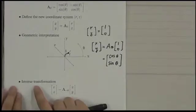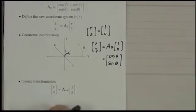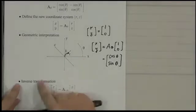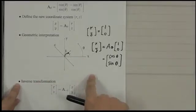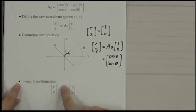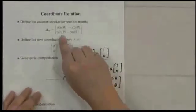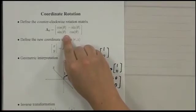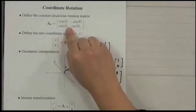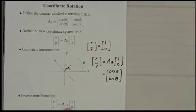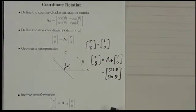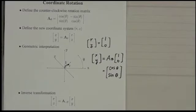The inverse transformation is just the opposite. This transformation is a rotation, so the inverse is rotating in the opposite direction. Basically, we plug in -θ to this matrix. If we plug in -θ to this matrix, we can easily get the inverse transformation. That's coordinate rotation.